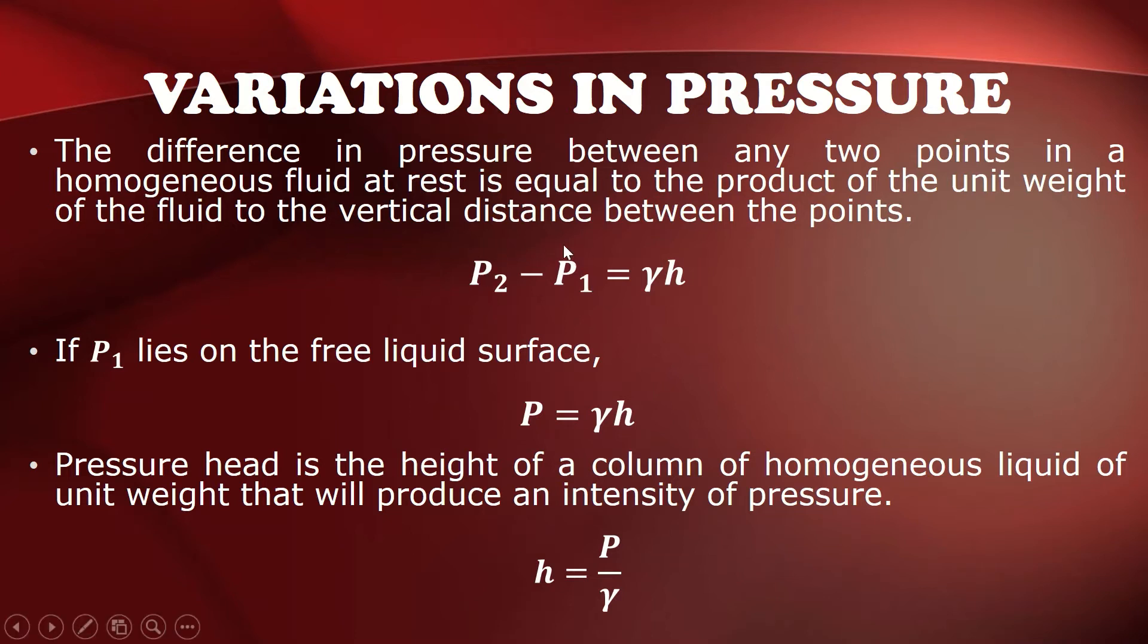the first point has a pressure of P1, the second point has a pressure of P2. The difference of that is equal to the product of the specific weight of the fluid and the vertical distance between the points. So if P1 lies on the free liquid surface, so P1 will be automatically equal to zero. So P is equal to unit weight times height.